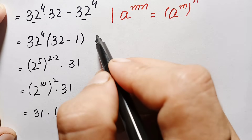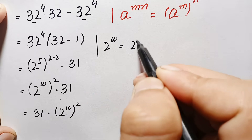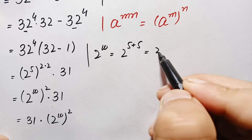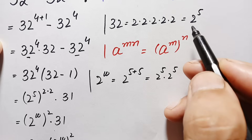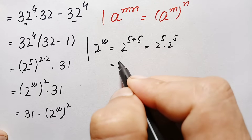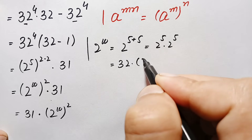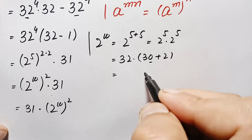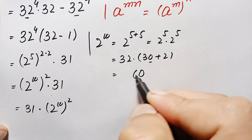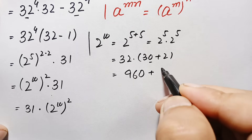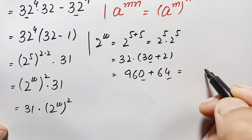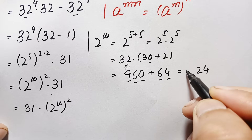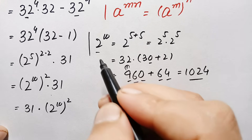We need to find the value of 2 raised to power 10. We can write this as 2 raised to power 5 plus 5. Using the exponential identity, this is 2 raised to power 5 times 2 raised to power 5. The value of 2 raised to power 5 is 32, so this becomes 32 times 32. We write the second 32 as 30 plus 2: 32 times 30 gives 960, and 32 times 2 gives 64. Adding these: 960 plus 64 equals 1024. So the value of 2 raised to power 10 is 1024.